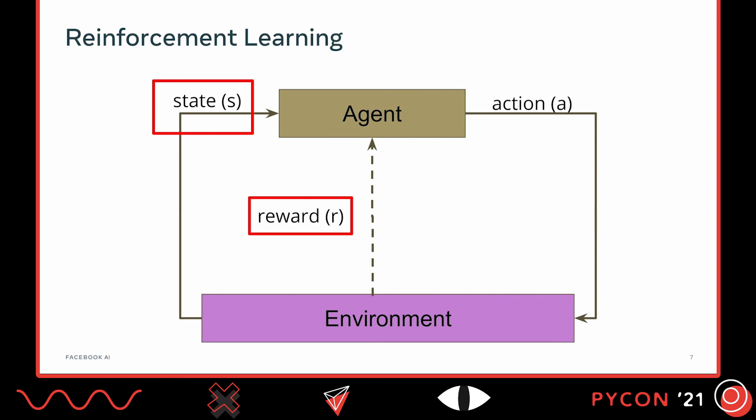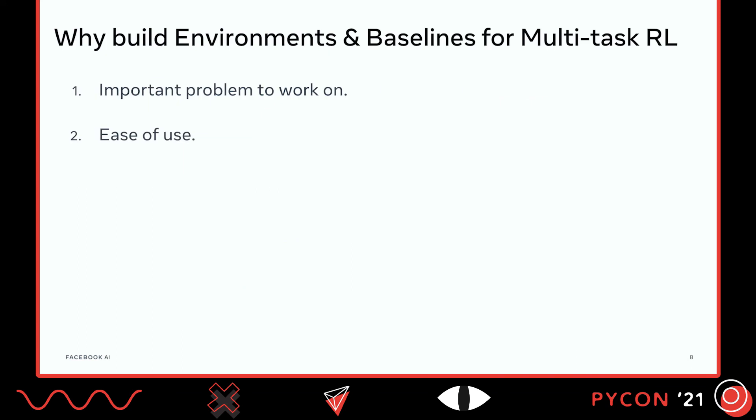So the next question is: why should we build environments and baselines for multitask RL? As I said, a lot of real-life problems can be mapped to reinforcement learning problems, and if we know how to solve those RL problems, we can solve the underlying problems. For some time, multitask reinforcement learning problems were mostly of academic interest. But now, more and more engineers and practitioners are becoming interested in it, so it has become an even more important problem to work on. The second aspect is ease of use: if someone develops an environment, it should be easy for me to use that environment without having to rewrite or copy-paste a lot of things.